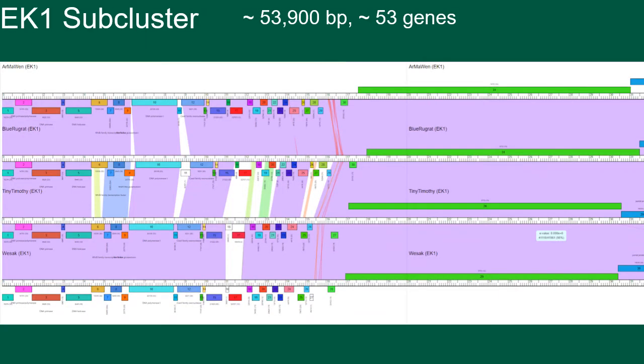And then we have the EK1 subcluster. So the EK1 subcluster contains a very limited number of members, of which St. Leo has found two of them, which are Wazak and Blue Rugrat. When looking at the genomic similarity, the members have fairly conserved homology among the different members, with the exception of a few small fragments of dissimilarity scattered throughout the genome.